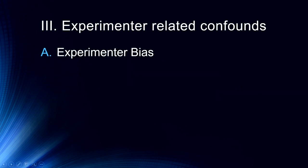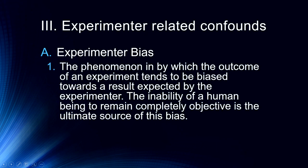That gets us to experimental-related confounds. The first one I want to talk about is experimental bias. This is not people doing nefarious things and intentionally biasing their research — it's their own biases about the outcome that are altering their behavior in ways they may not be aware of. This is the phenomenon in which the outcome of an experiment tends to be biased towards the result expected by the experimenter. It's our inability as humans to remain completely objective that's the ultimate source of bias.